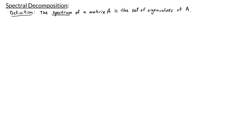First of all, the spectrum of a matrix A is just the set of eigenvalues of A. As a quick example, let's revisit some of the matrices from our previous videos.